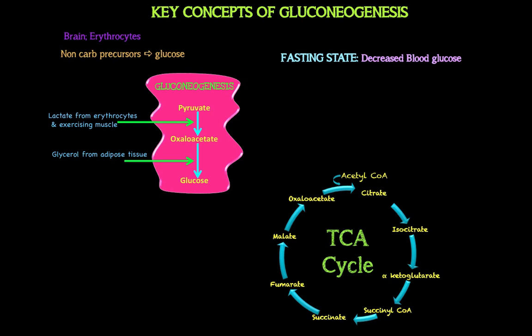You might be wondering what the TCA cycle has to do with gluconeogenesis — we'll get there. But first, a common multiple-choice exam question: is acetyl-CoA a glucogenic precursor? For animals, the answer is no — acetyl-CoA is not a glucogenic precursor. But for plants and microorganisms, the answer is yes — acetyl-CoA can be used as a glucogenic precursor.